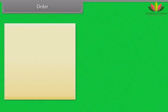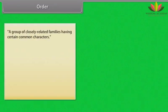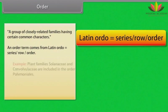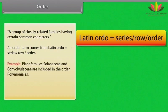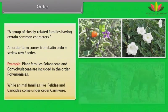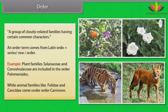Order: A group of closely related families having certain common characters. The term order comes from Latin ordo, meaning series or order. For example, plant families Solanaceae and Convolvulaceae are included in the order Polemoniales, while animal families like Felidae and Canidae come under order Carnivora.